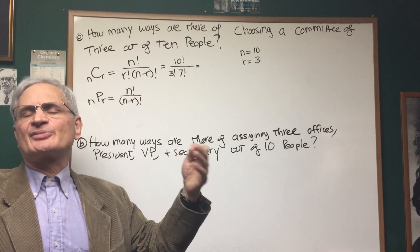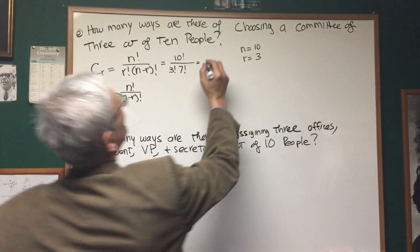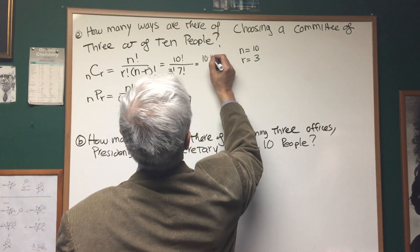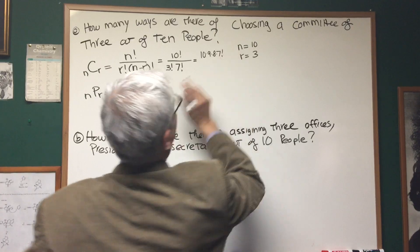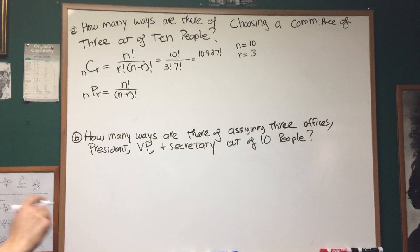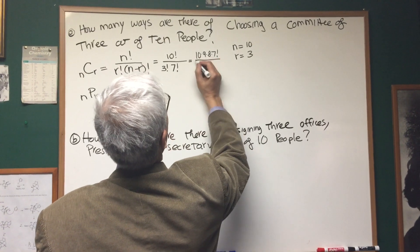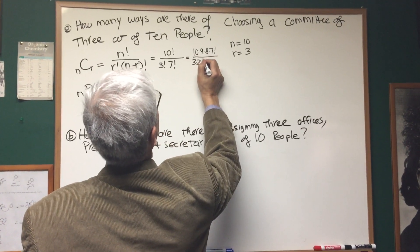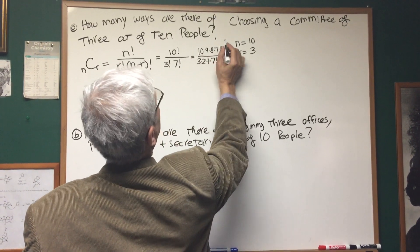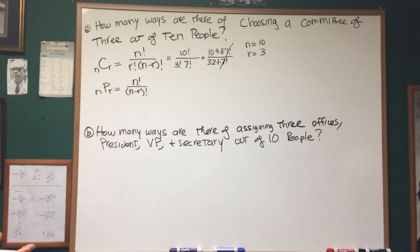So I'm going to stop right there: seven factorial meaning seven times six times five times four times three times two times one. Why do I stop there? Because I can see the opportunity to just cancel out the seven factorial from the denominator.